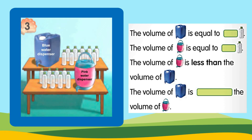The volume of the blue water dispenser is equal to 10 bottles of water. The volume of the pink water dispenser is equal to 8 bottles of water. The volume of the pink water dispenser is less than the volume of the blue water dispenser.